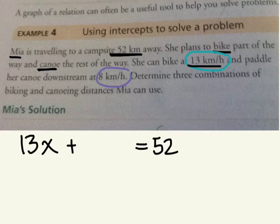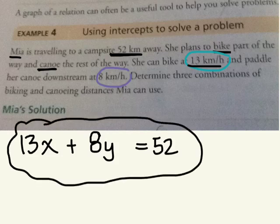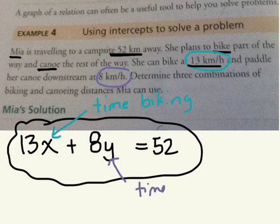Plus, what would it be for canoeing? Eight. We'll call it Y. Altogether, it was 52 kilometers. This will tell us the time she spent biking, and this will tell us the time she spent canoeing.